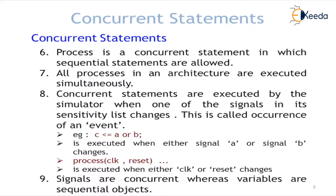All processes in an architecture are executed simultaneously. If we declare multiple processes — say, process 1 for addition, process 2 for ALU logic, process 3 for shift register, process 4 for the counter — all these processes are executed simultaneously. That's what makes process a concurrent statement.